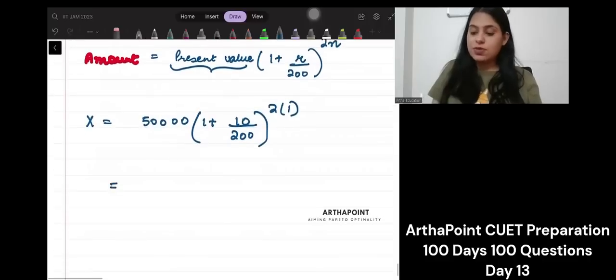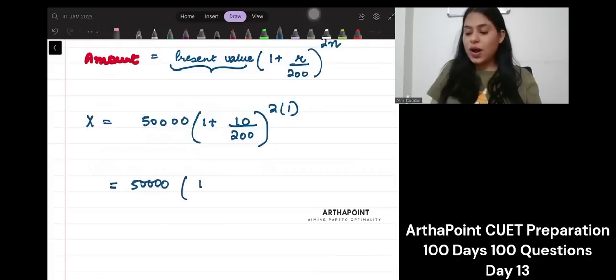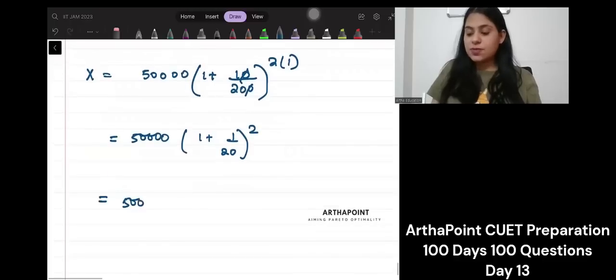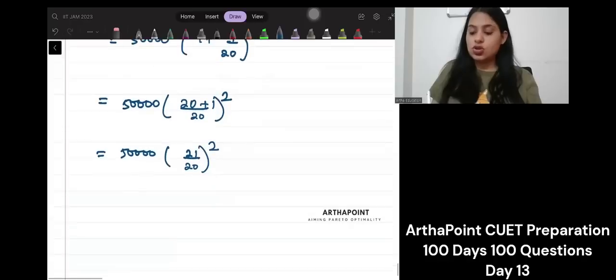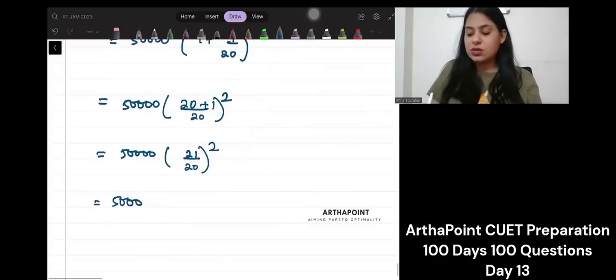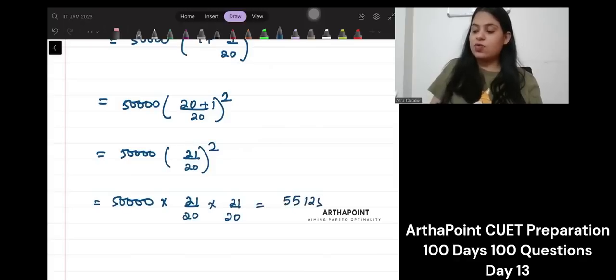Here, this will be 50,000 into 1 plus, actually, this will be 1 by 20 to the power 2. So, this will be 50,000, 20 plus 1 by 20 to the power 2. So, this will be 50,000, 21 by 20 to the power 2. So, this will be 50,000 into 21 by 20 into 21 by 20.